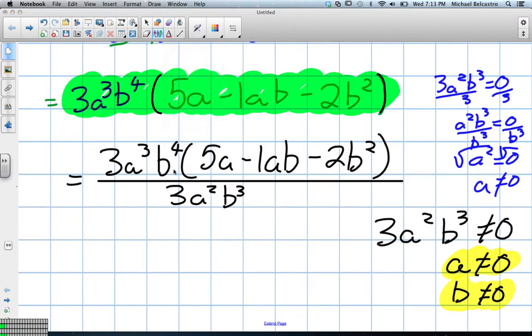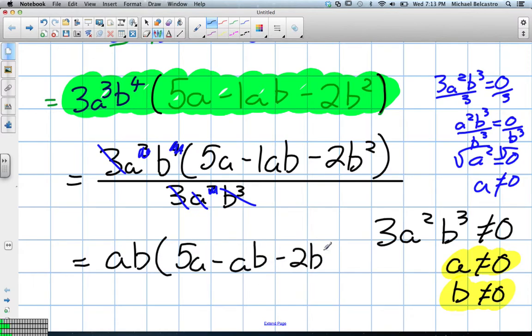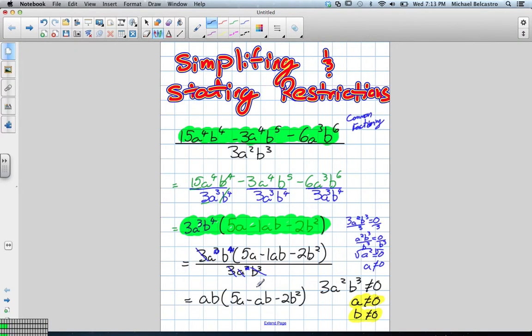Now, we simplify. Well, again, like I said, because this is like a term that's being multiplied by all three we have in here, let's look at the coefficient first. What do these two coefficients make if we divide them? One. One. Or, essentially, you could say they cancel out. So, now we only have a coefficient one, which we don't really need to write. a cubed divided by a squared, what happens to that? It just becomes a. Yeah, that's right. So, we can kind of scratch these out, and we have just an a on top, so we'll write a. And b4 divided by b3? It just becomes b. It just becomes b, so we kind of just have a b on top, okay? And then we have 5a minus ab minus 2b squared, and that's it. There's our simplified version at the very bottom. That's our final answer. We'll highlight that in blue. This is our final answer. No longer a fraction. We've simplified it, and we have our restrictions. a can't be zero, and b cannot be zero, okay?